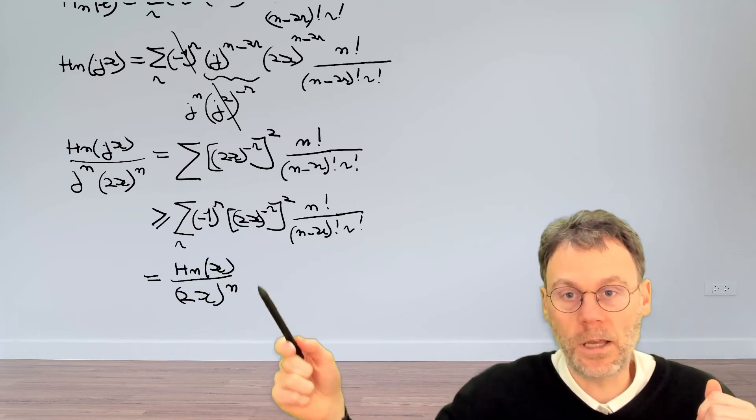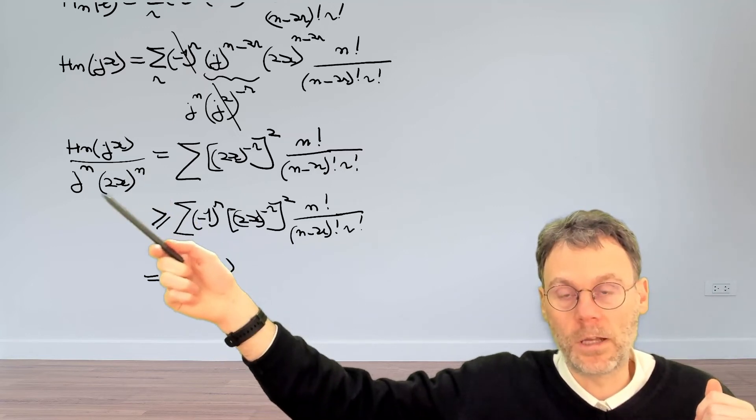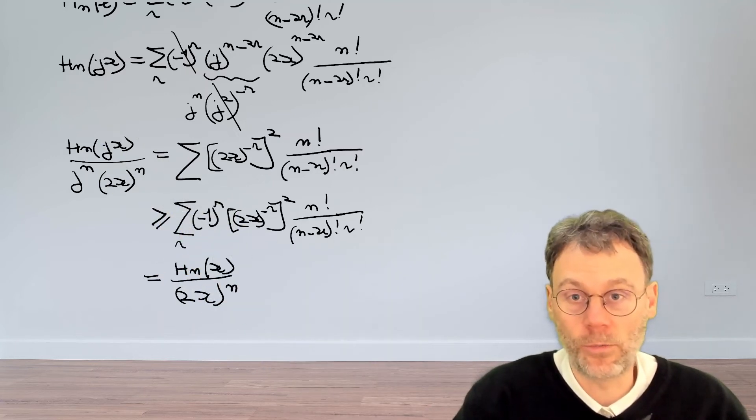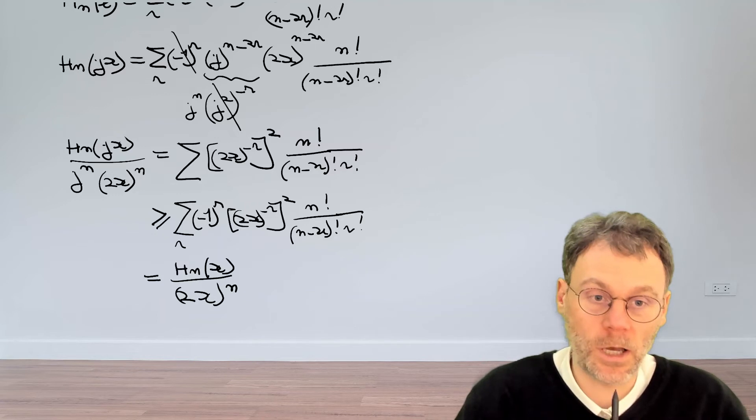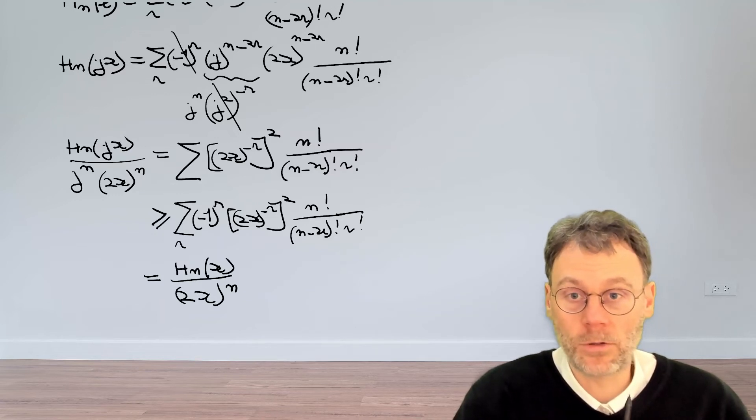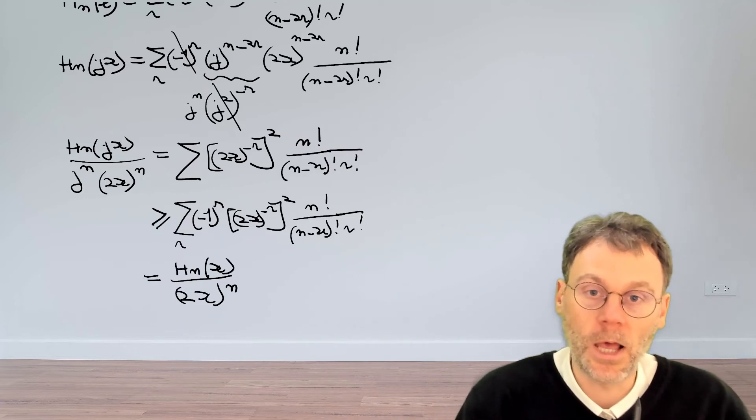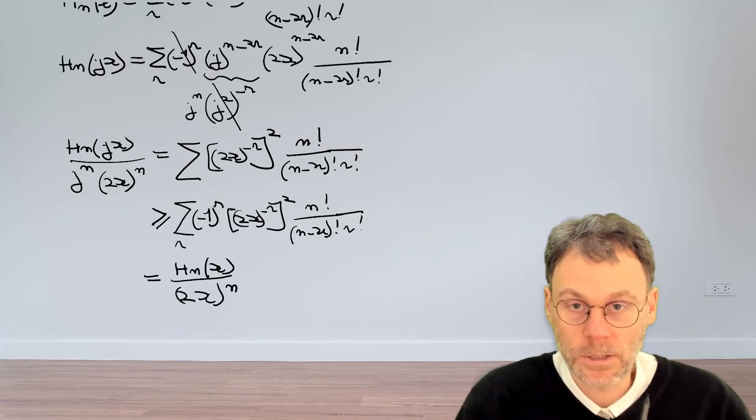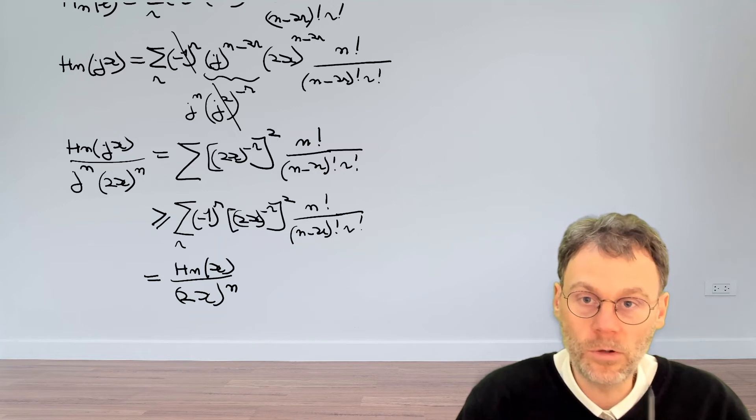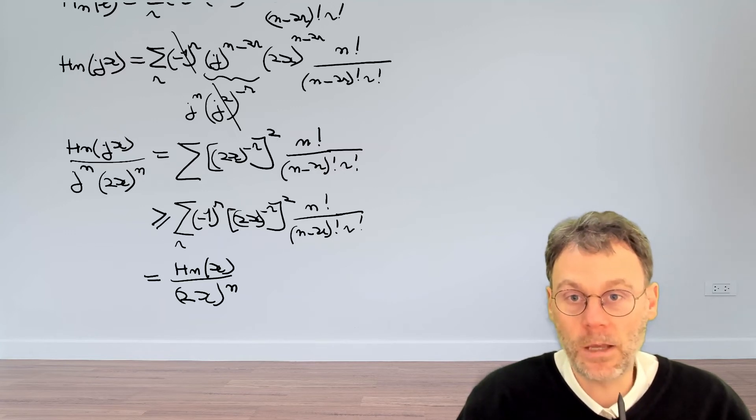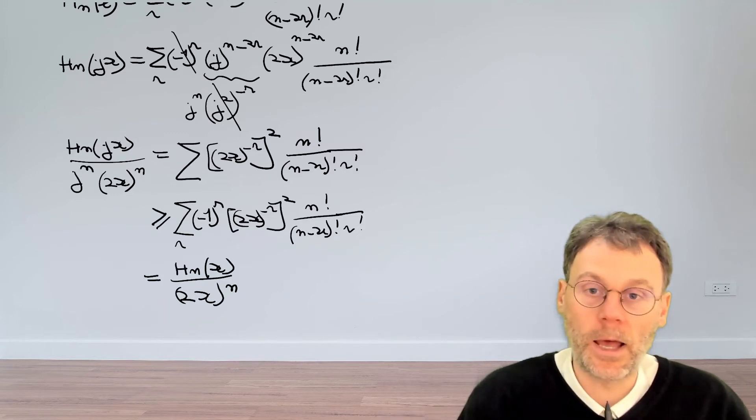So now we have that this thing is smaller than that thing, which looks suspiciously like what we need to prove, apart from some absolute value signs. So you might be tempted to just be sloppy here and put absolute value signs everywhere, and then things are finished. However, that's not really true. We need to be a little bit more careful here. So pause the video, try to think about stuff that could go wrong, and make sure that it does not go wrong in our particular case here.